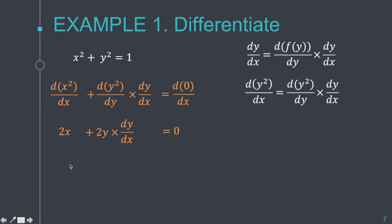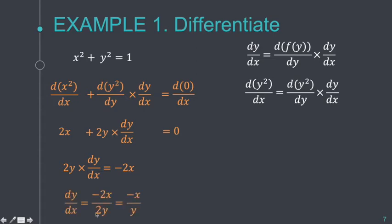Our main goal is to find dy/dx. We transpose 2x to the other side, which becomes −2x. To find dy/dx, we divide the whole equation by 2y, giving dy/dx = −2x/2y. Cancel the 2, and the derivative is −x/y.